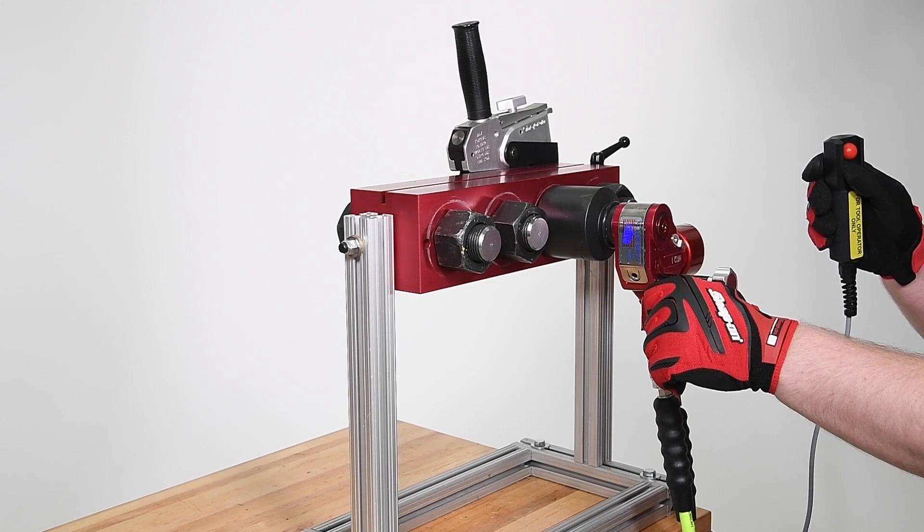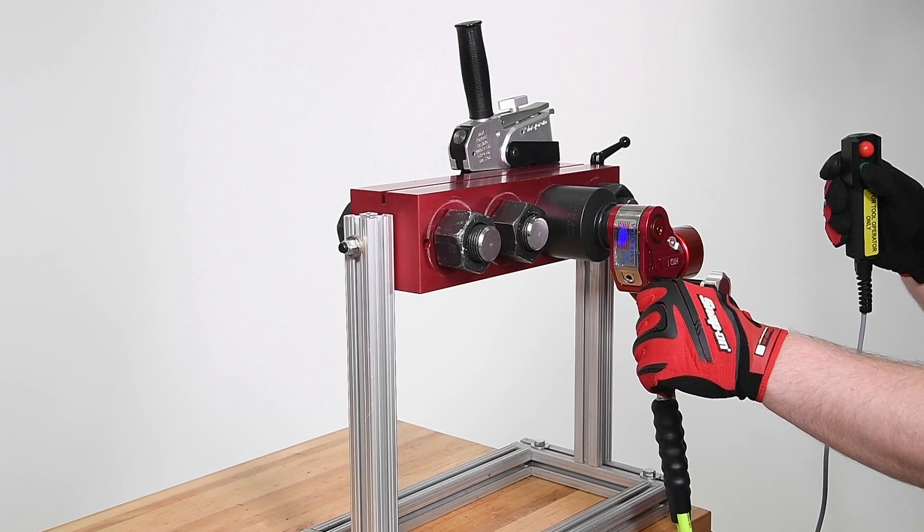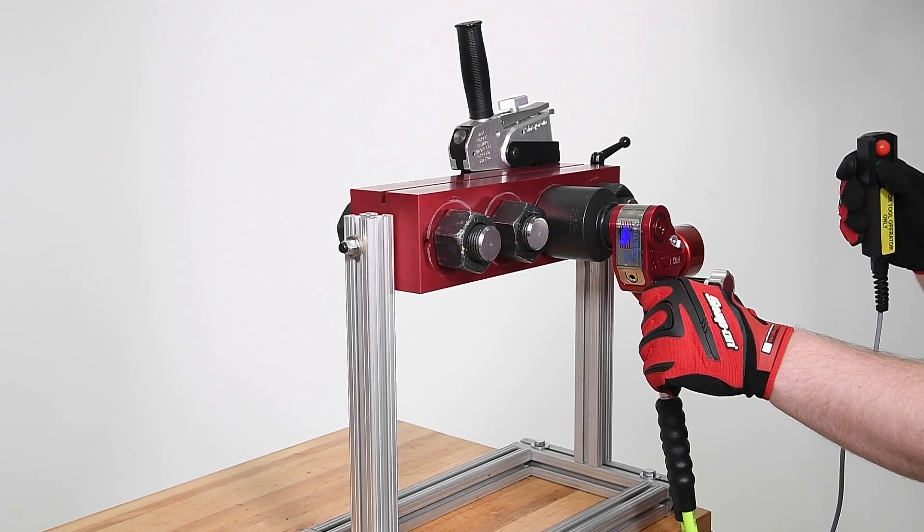When torquing a fastener, continue cycling the wrench until it stalls. Then engage the pump a few more times to be sure the fastener has been fully torqued to the desired value.